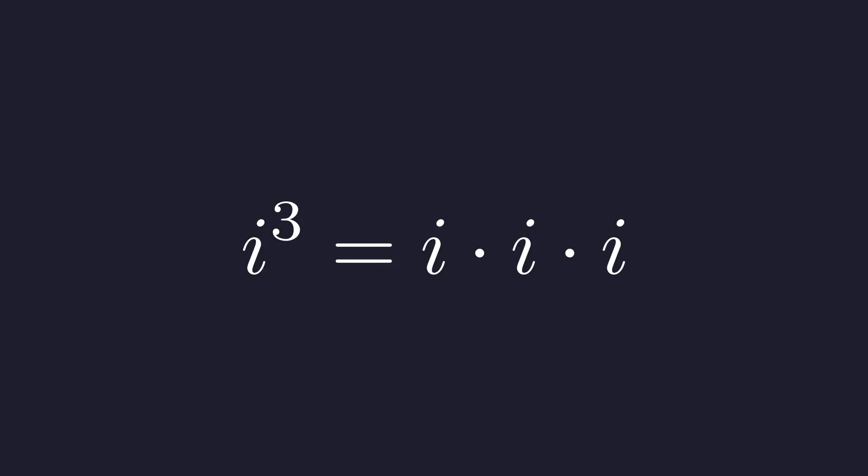The argument starts simple enough. We write i cubed as i times i times i. Now, here's the key move. We replace each i with its definition, the square root of negative 1.